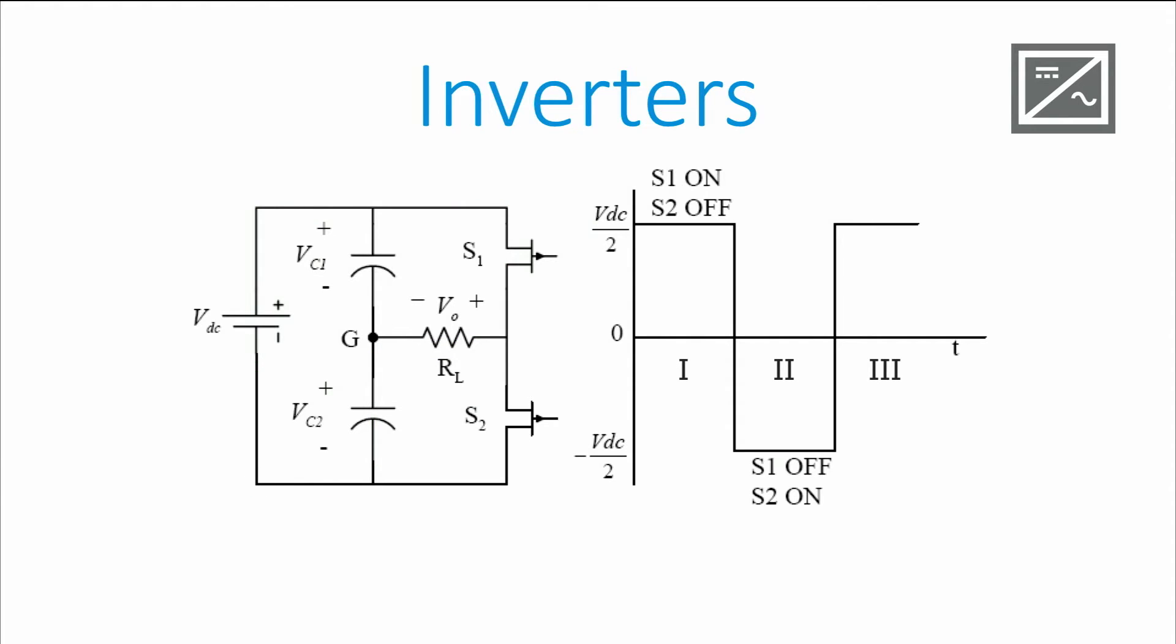If on the other hand, S2 is on and S1 is off, the circuit will conduct through the highlighted path. The magnitude of the output voltage is half the magnitude of the input voltage, but the sign is opposite. This corresponds to time period 2 in the figure.